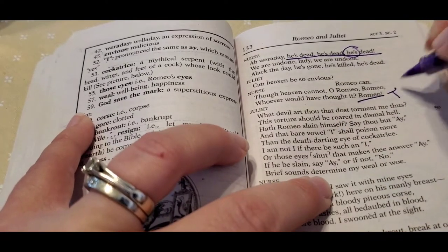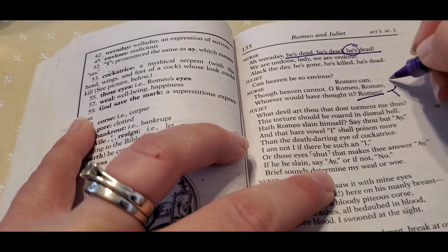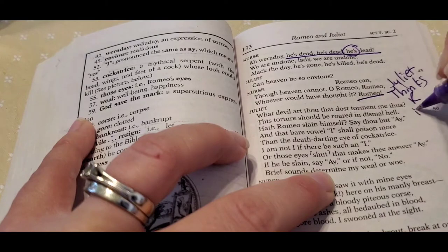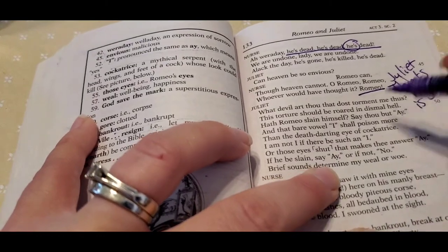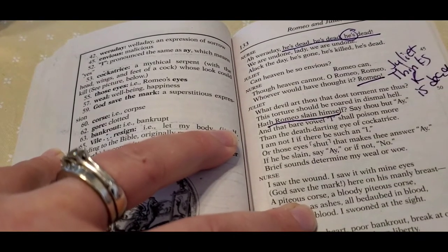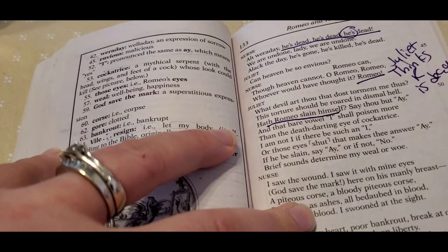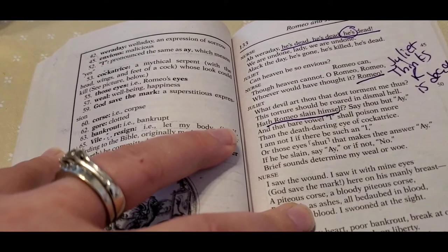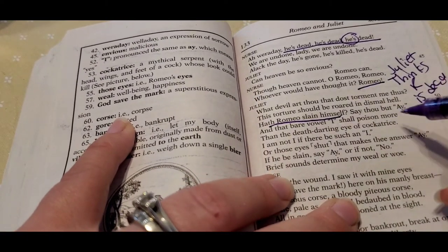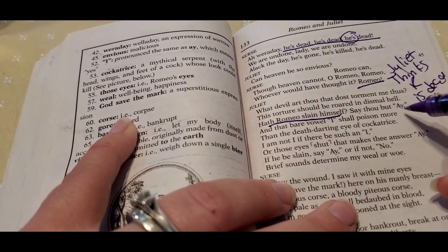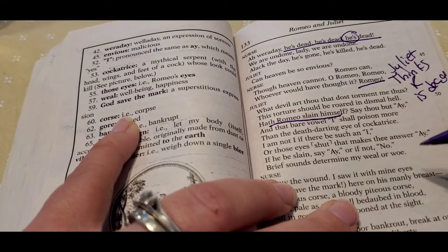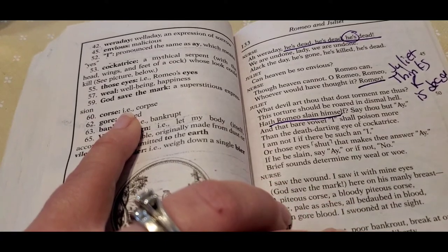So the nurse is saying Romeo, but blaming him. And so Juliet thinks Romeo is dead. And she goes, what the devil torments me? Has Romeo slain himself? And that's her first instinct. Did he kill himself? Really? Like that's your first instinct? I would think like, man, maybe he got hit by a car. Not during that time period, obviously. But her first go to thought is, no, this guy must've killed himself. And so she says, tell me yes, and I shall poison myself. So she's like, and I'll kill myself.